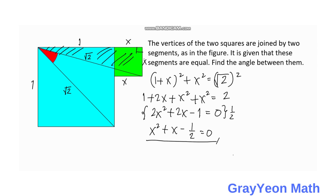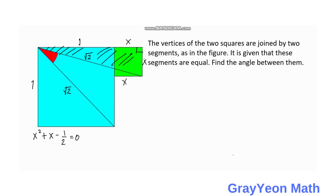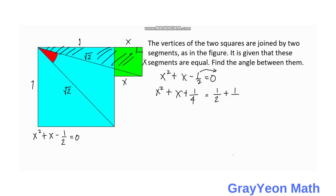Then we need to solve this into a quadratic equation. We can solve this quadratic equation by completing the square. By completing the square, we simply transpose the negative one-half to the right-hand side. Then we square half of the x coefficient, which is one-half, and square it to get positive one-fourth. So if we add one-fourth to the left-hand side, we also add one-fourth to the right-hand side.